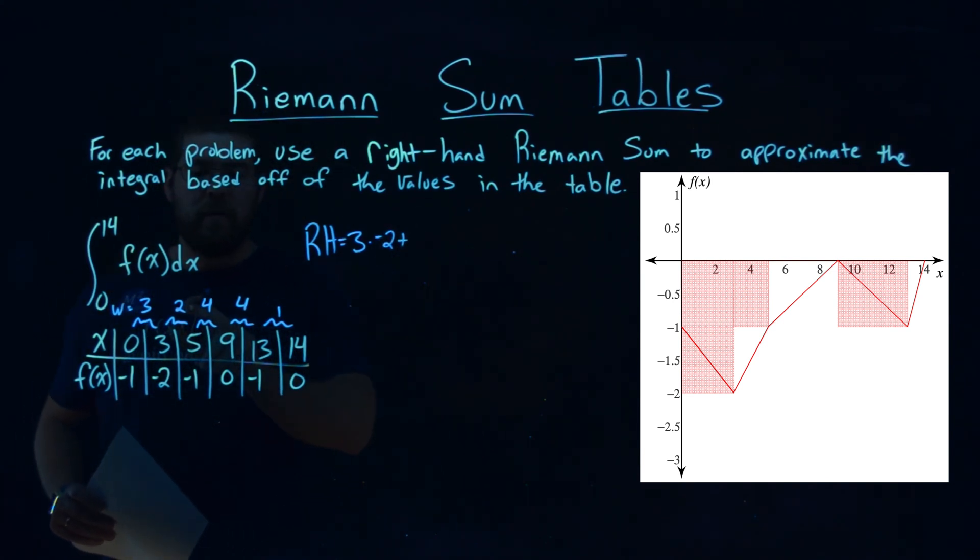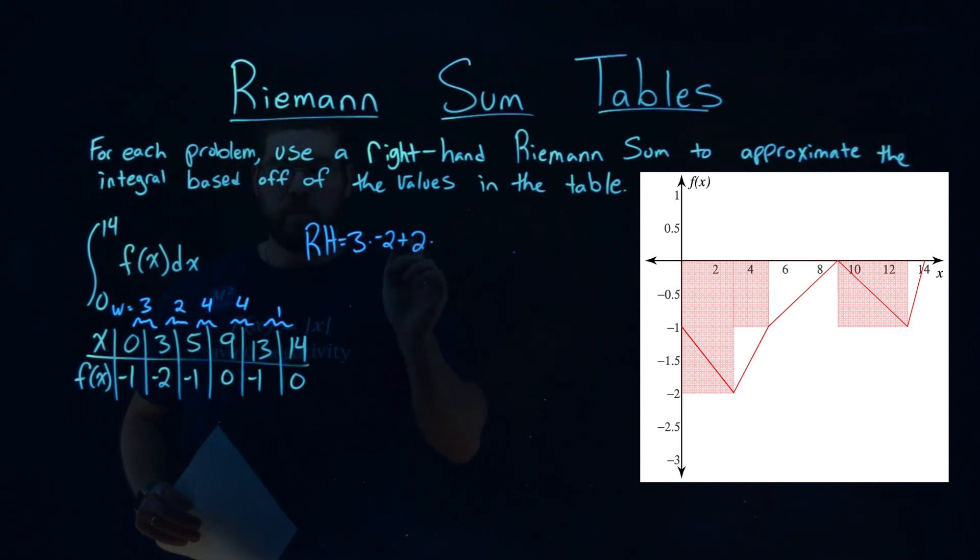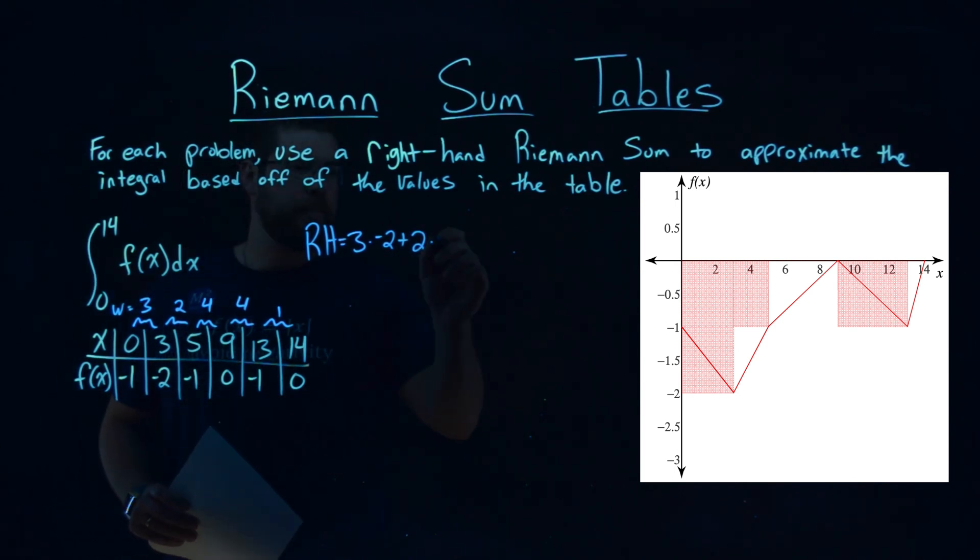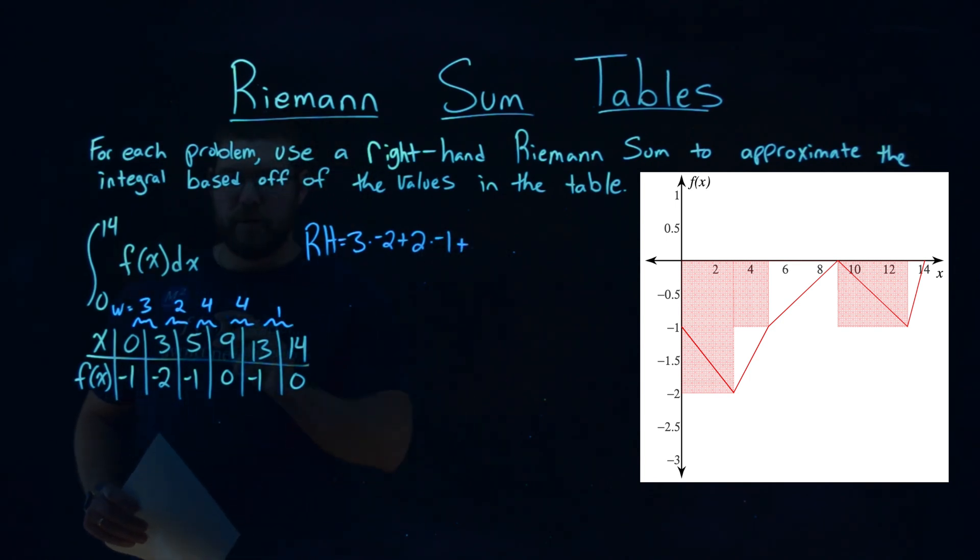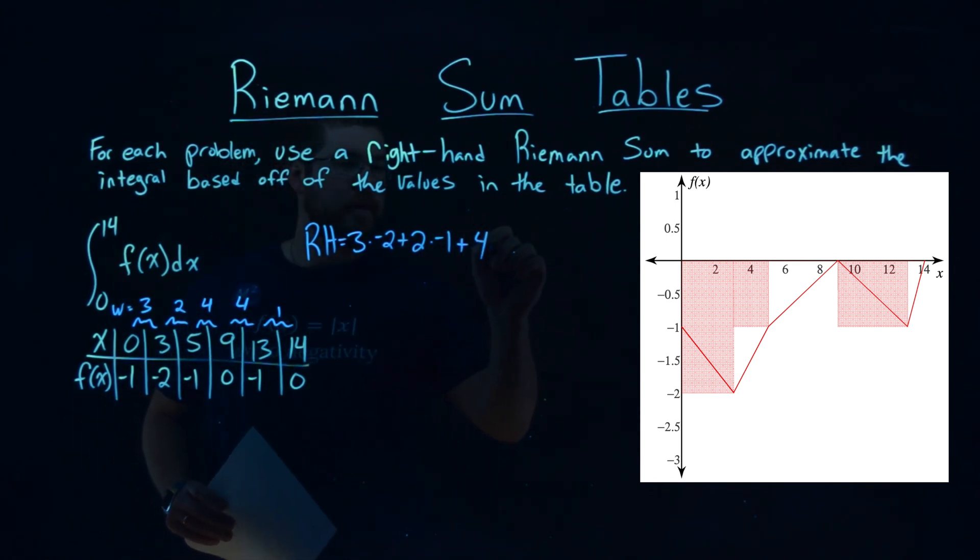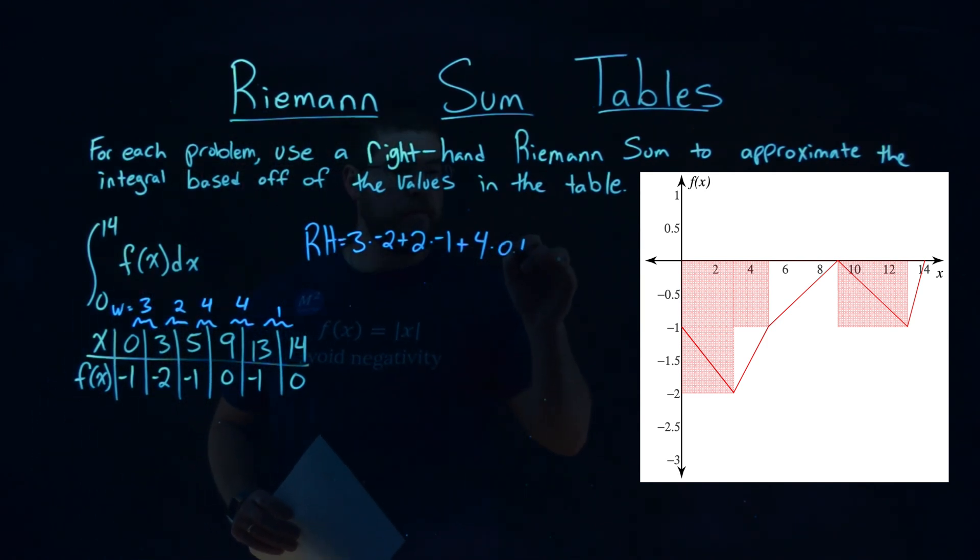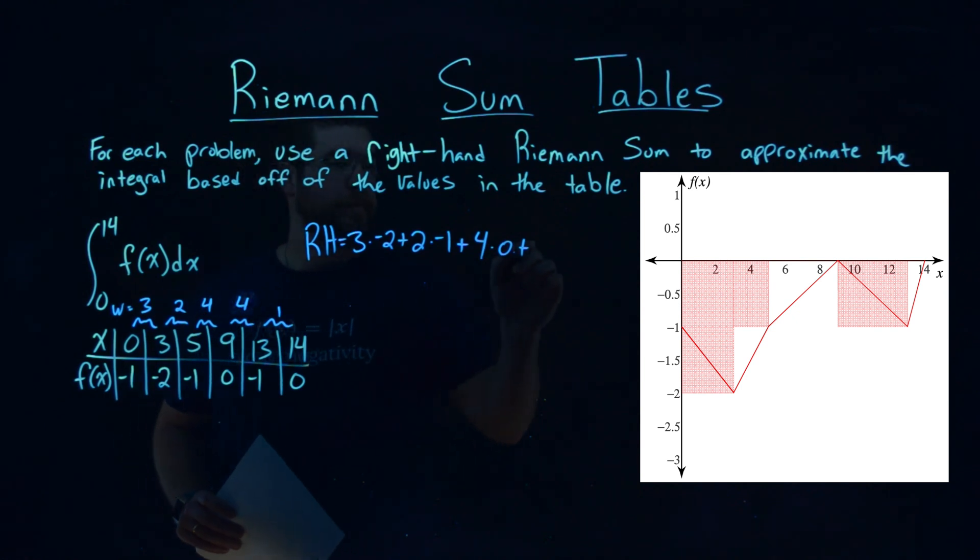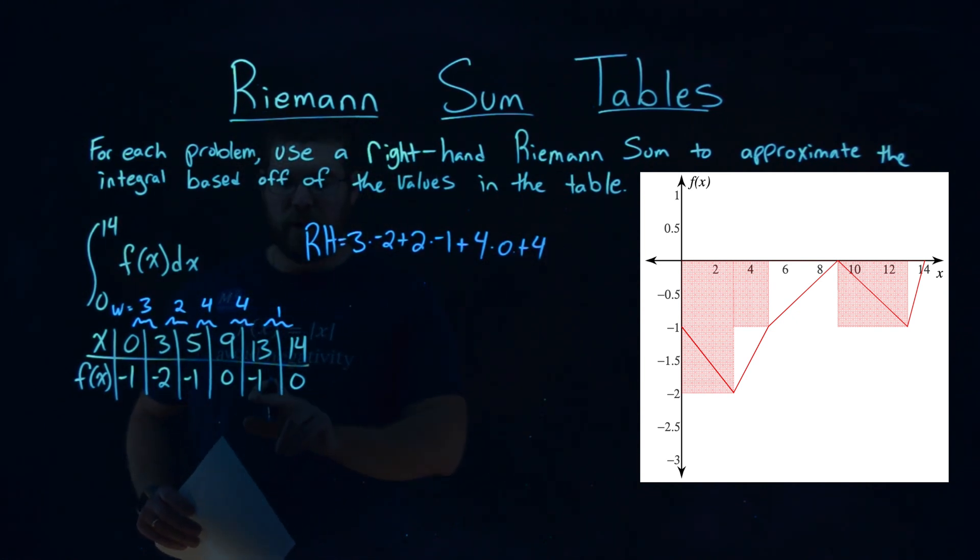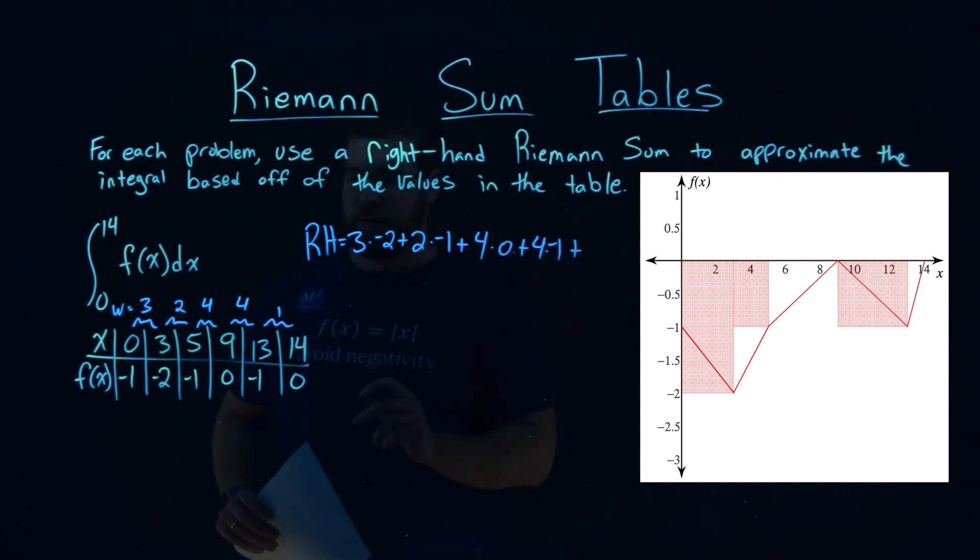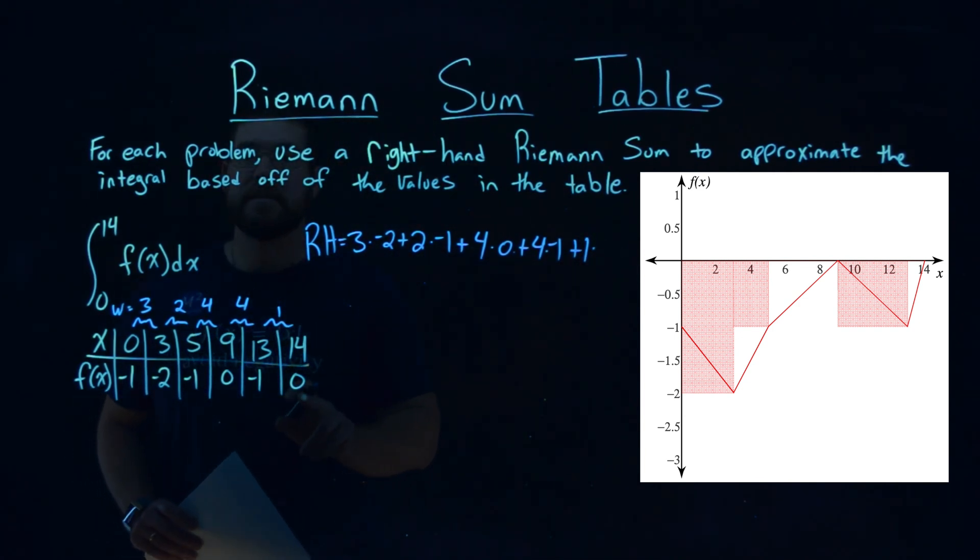Next one. If we have a width of 2, multiply by the right part of the rectangle, height negative 1. Plus a width of 4 is next, times its height 0, right-hand side. Plus width again of 4, times its height, negative 1. Then plus, lastly, a width of 1, times its height is 0.